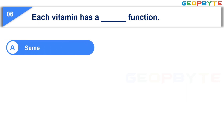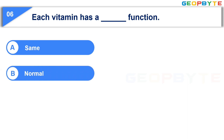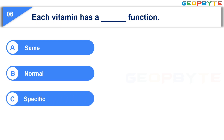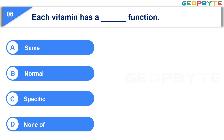Option A: same. Option B: normal. Option C: Specific. Option D: None of the above. Your time starts now.